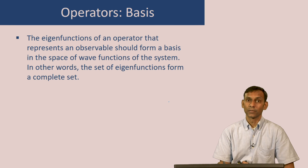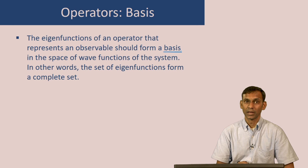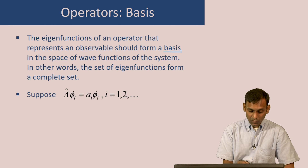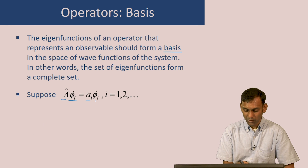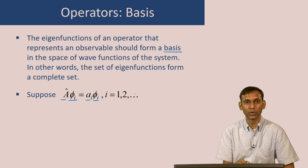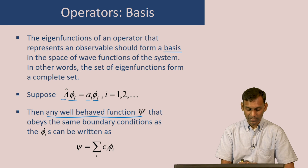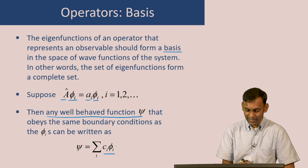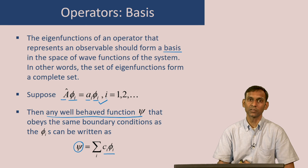The other property that a quantum mechanical operator for an observable must have is that its eigenfunctions should form a basis in the space of wave functions of the system — in other words, the set of eigenfunctions should form a complete set. If the phi_i's are eigenfunctions of operator A with corresponding eigenvalues a_i, then forming a complete set means that any well-behaved function psi can be written as a linear combination of these eigenfunctions.